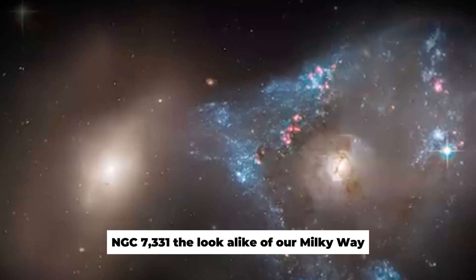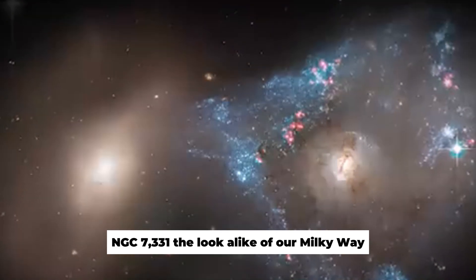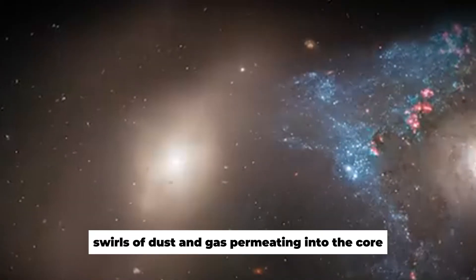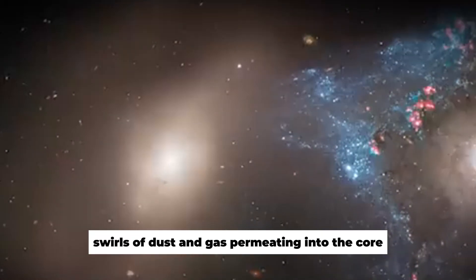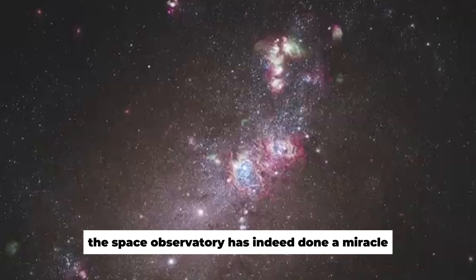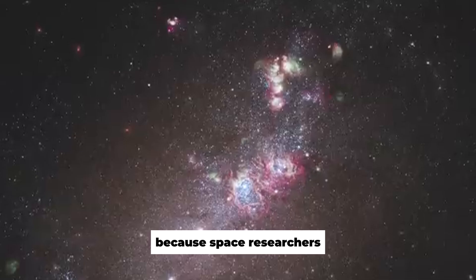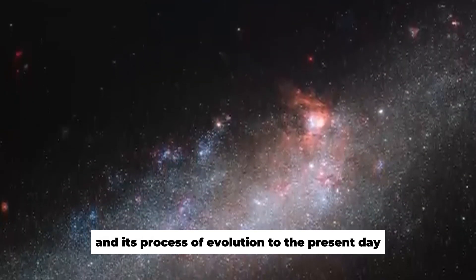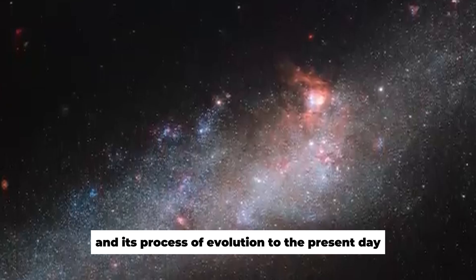NGC 7331, the lookalike of our Milky Way, is deficient in a bar of stars, swirls of dust and gas permeating into the core. But our Milky Way has it all. The Space Observatory has indeed done a miracle because space researchers can now gain a better understanding of the galactic environment and its process of evolution to the present day.